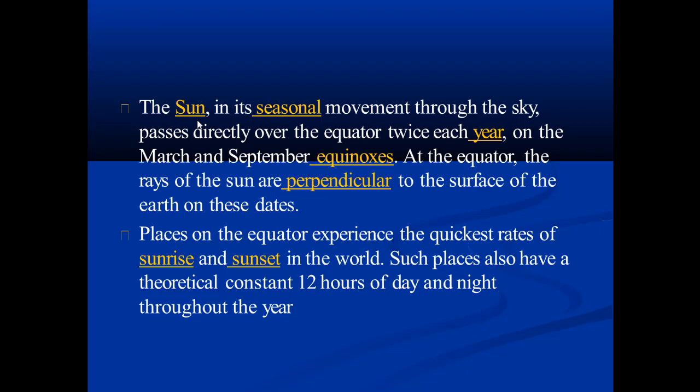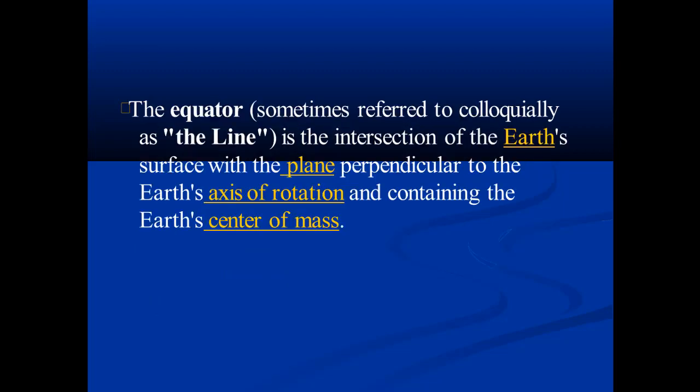Such places on the equator have a theoretical constant twelve hours of day and night throughout the year. The equator, sometimes referred to colloquially as 'the line,' is the intersection of the earth's surface with the plane perpendicular to the earth's axis of rotation and containing the earth's center of mass.